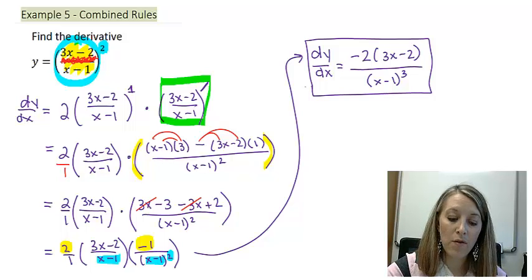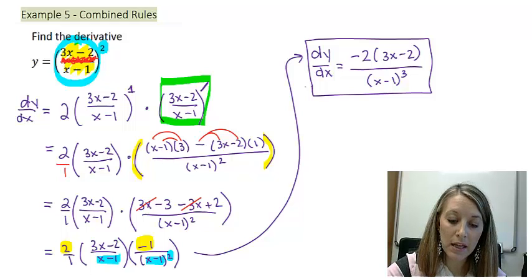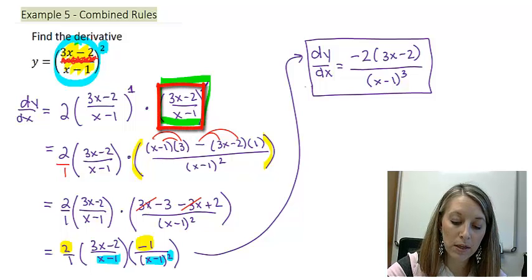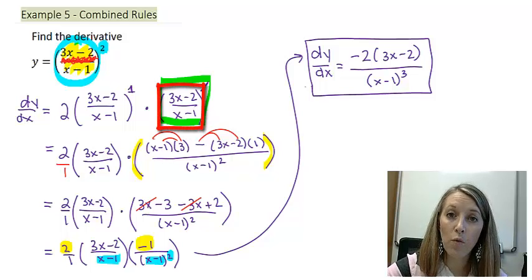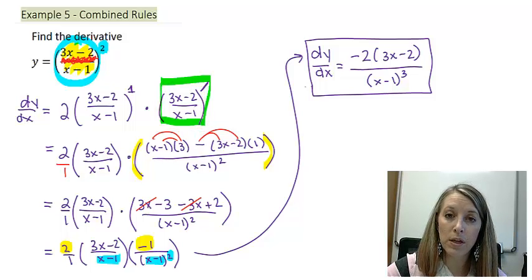To review: if you have one inside piece, then you need to start with the chain rule. And inside the chain rule, that's when you need to take the derivative of whatever you see on the inside. So for this example, that's when we needed to do the quotient rule.